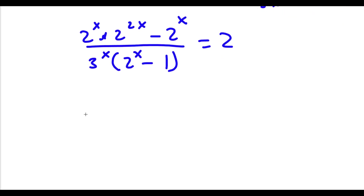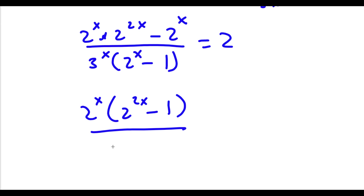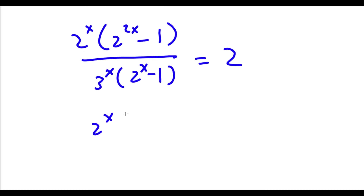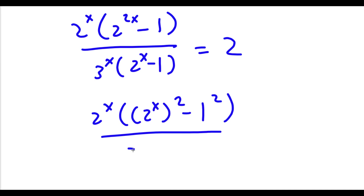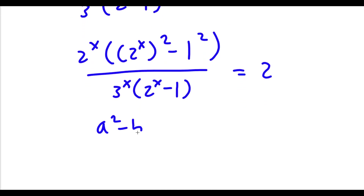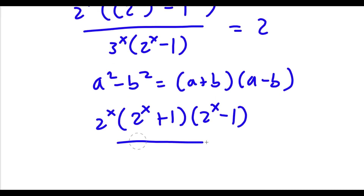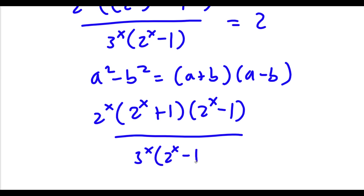So now from our numerator, I'm going to factor out 2x. So now I get 2x times 2 to the power of 2x minus 1. Now in our denominator, I have 3 to the power of x times 2 to the power of x minus 1. Now 2 to the power of 2x is the same thing as 2 to the power of x squared, and then I have minus 1 squared. And I have this over 3 to the power of x times 2 to the power of x minus 1, is equal to 2. Now if I have something in the form a squared minus b squared, this is equal to a plus b times a minus b. So 2 to the power of x squared minus 1 squared is going to equal 2 to the power of x plus 1 times 2 to the power of x minus 1. Now I have this over 3 to the power of x times 2 to the power of x minus 1, which is equal to 2.